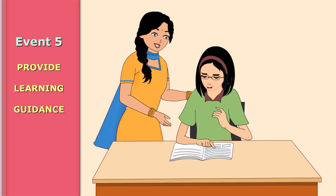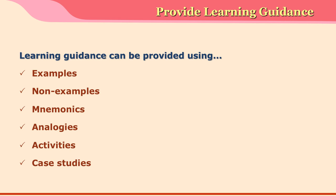The fifth event is provide learning guidance. In the previous event the teacher has already taught the topic; now this event is about providing additional guidance. This can be done by giving mnemonics, helping learners create charts, assigning project work where they collect pictures or gather new knowledge. Basically, learners should be able to rehearse whatever they learned in the previous event, which helps encode new knowledge into long-term memory. The teacher can use examples or non-examples, mnemonics, analogies, activities, or case studies as strategies for providing learning guidance.